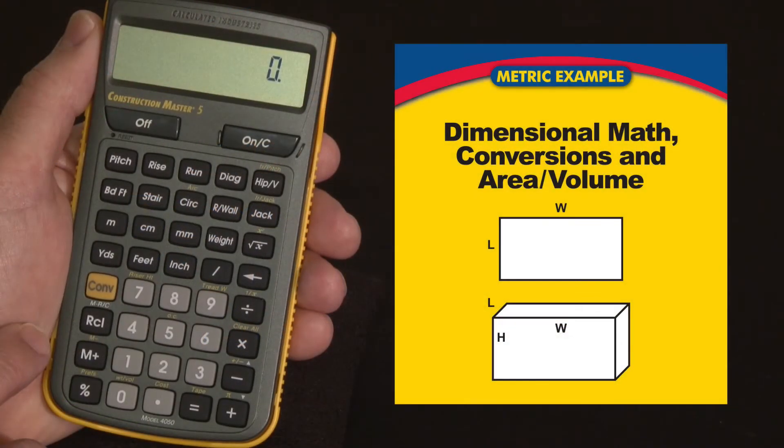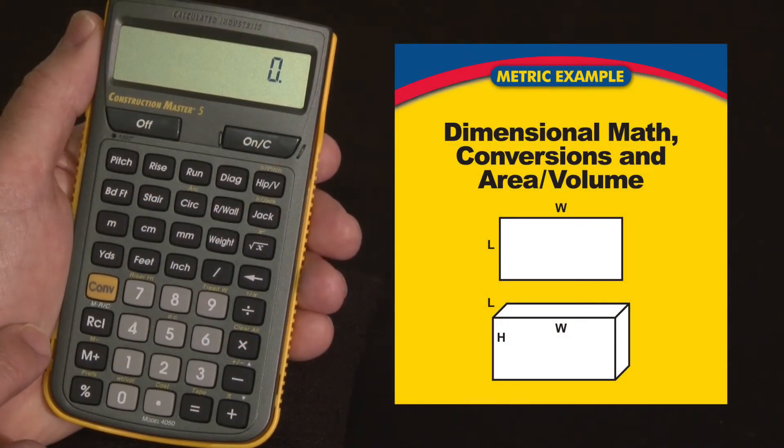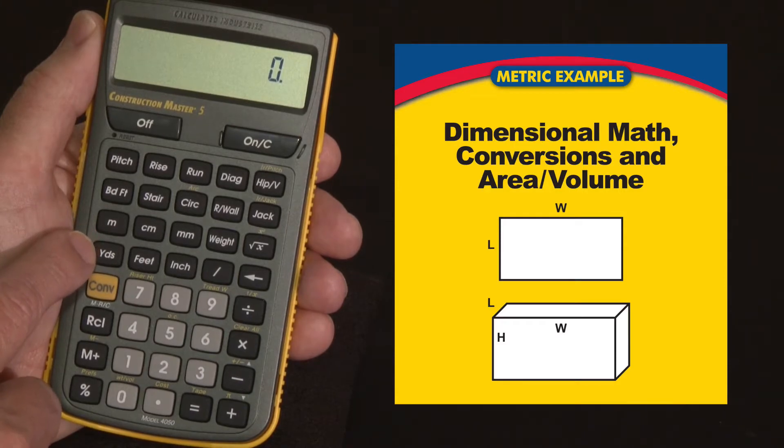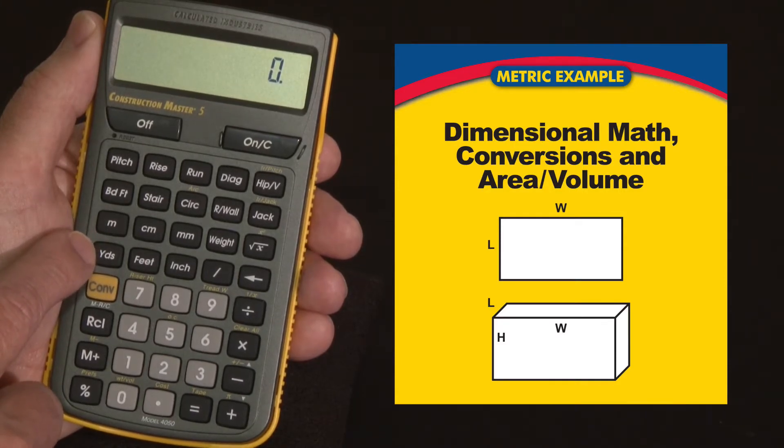Now let me show you how the Construction Master 5 can give you fast, accurate solutions for all your dimensional math and conversion needs. These keys here let you do linear, area, and volume calculations in metric, imperial, or a combination of both.